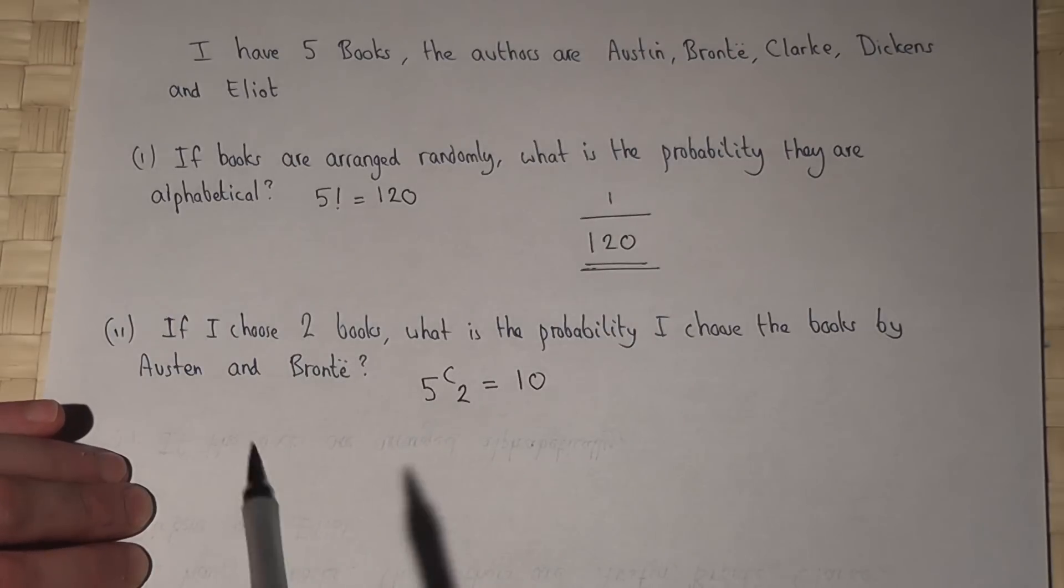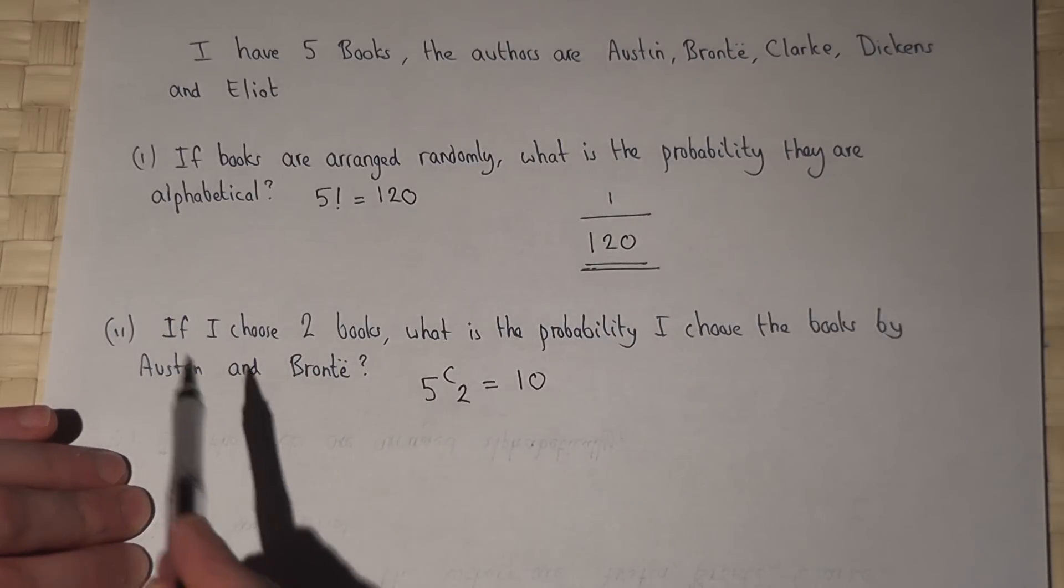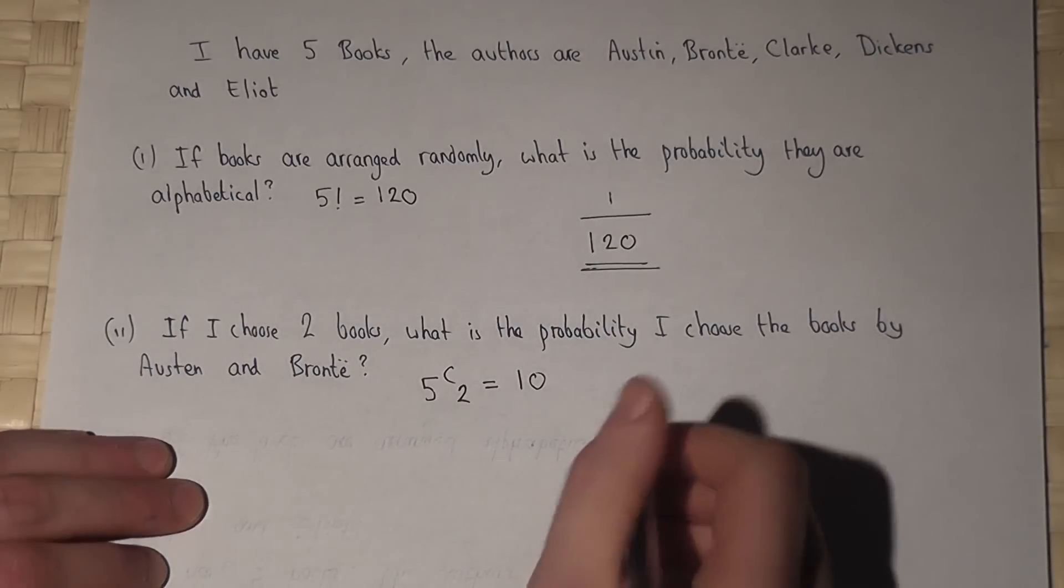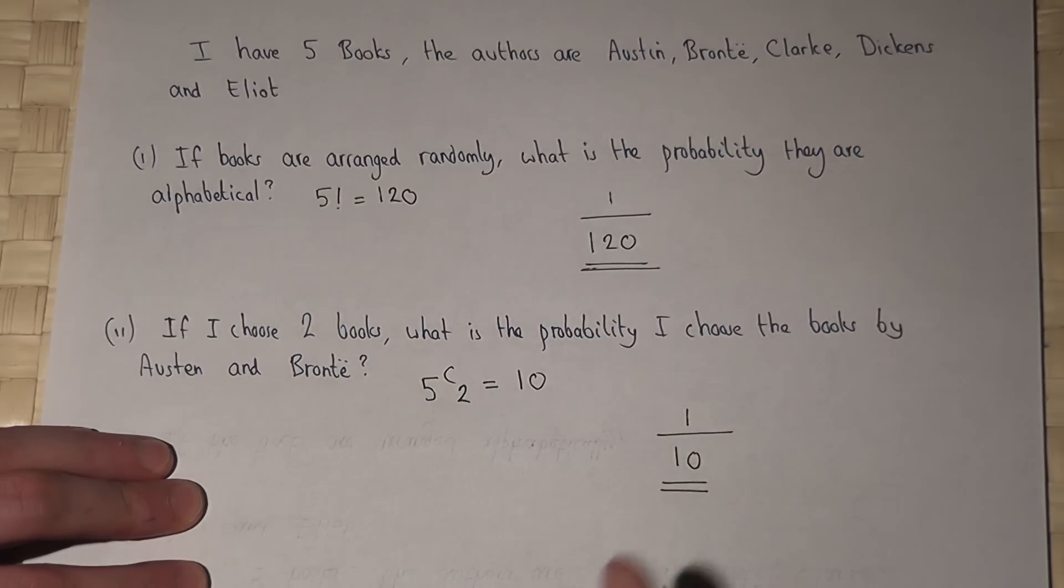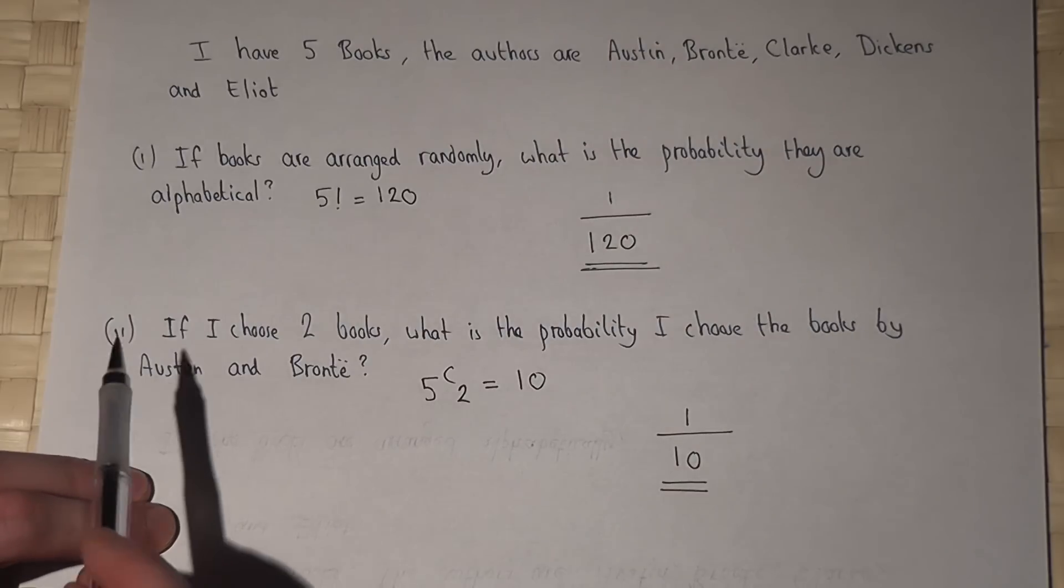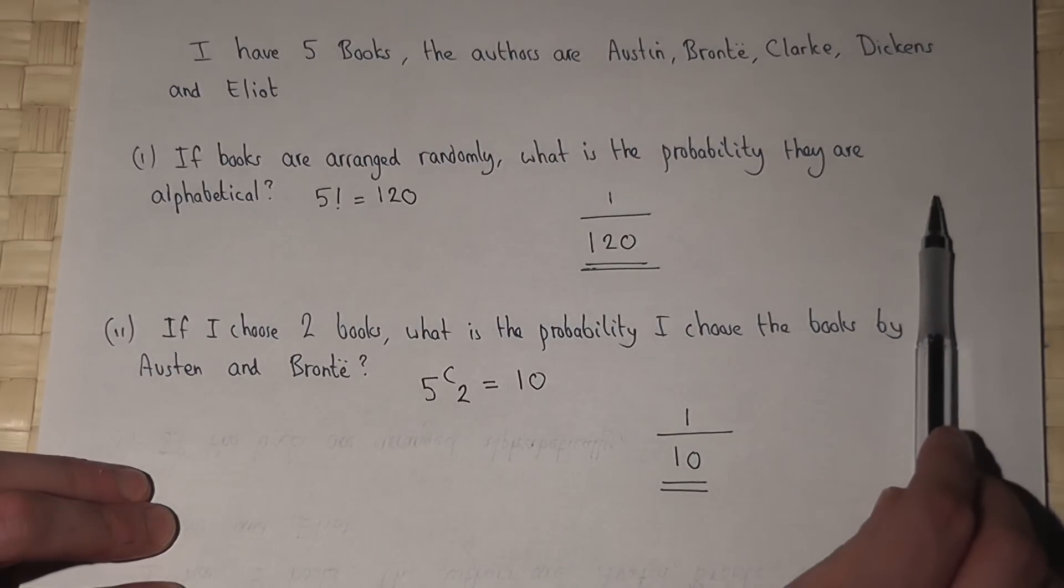But only one of those choices will contain the books by Austin and Bronte. So the answer is one out of ten. One option out of the ten contains the books by Austin and Bronte. Thank you.